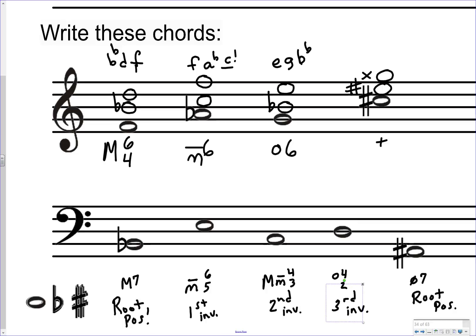Going back to build these: the first is a root position major 7th chord. Using the full Arabic numerals 7-5-3, place a 7th above the bass, a 5th above the bass, and a 3rd above the bass. We need a major triad — B-flat, D, F — and a major 7th from root to 7th. No accidentals need to be added. We do not want to change any given notes.